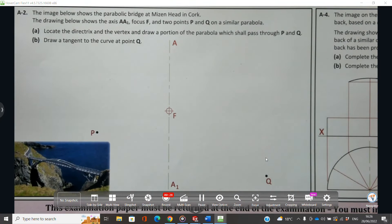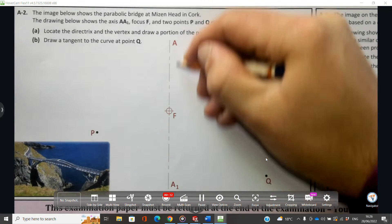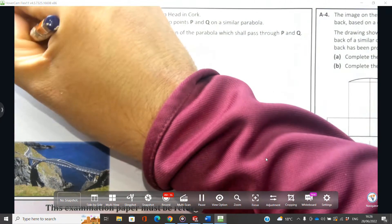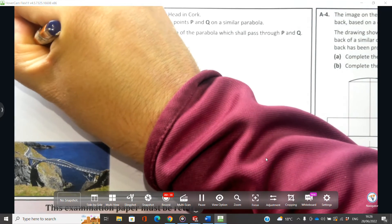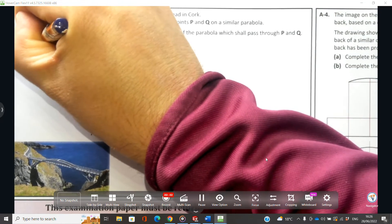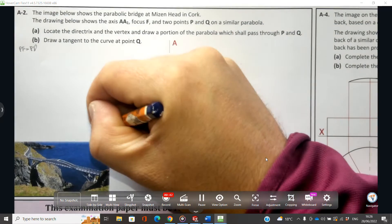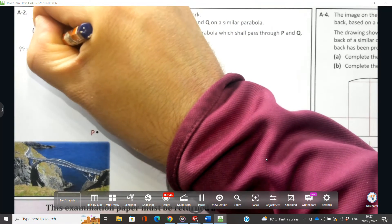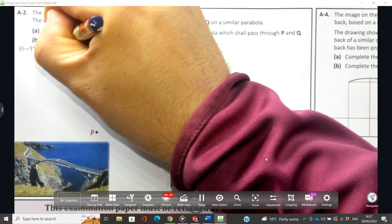So points P and Q are both on the directrix. Now we can see here the directrix is vertical. The key with a parabola is P to F is equal to P to D. So the distance from P to F is the same distance as P to the directrix, or Q to F is equal to Q to D, and we know this is vertical through the page.